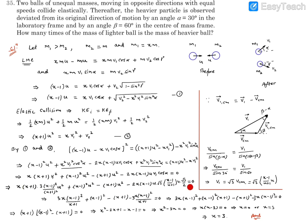After cancelling u², the equation becomes: 3x(x − 1)²/(x + 1) + (x − 1)² − (x + 1) − 3x(x − 1)²/(x + 1) = 0. The first and last terms cancel, leaving: (x − 1)² − (x + 1) = 0.